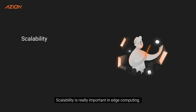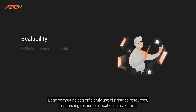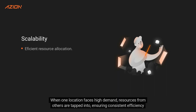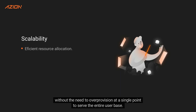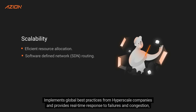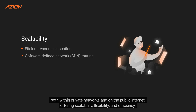Scalability is really important in edge computing. Edge computing can efficiently use distributed resources, optimizing resource allocation in real-time. When one location faces high demand, resources from others are tapped into, ensuring consistent efficiency without the need to over-provision at a single point to serve the entire user base. It implements global best practices from hyperscale companies and provides real-time response to failures and congestion both within private networks and on the public internet, offering scalability, flexibility, and efficiency.